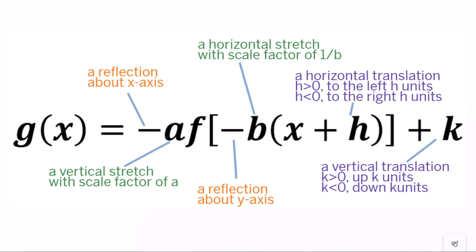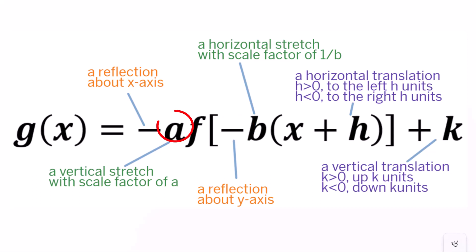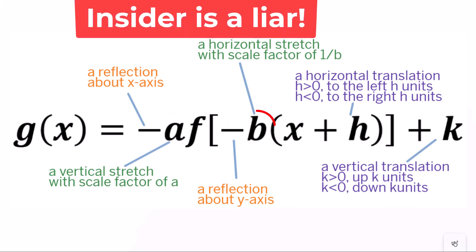Let's draw a conclusion. For g(x) equals negative a · f(negative b · (x + h)) + k: the negative sign before a is a reflection about the x-axis; the negative sign before b is a reflection about the y-axis; a gives a vertical stretch with a scale factor of a; b gives a horizontal stretch with a scale factor of 1 over b.